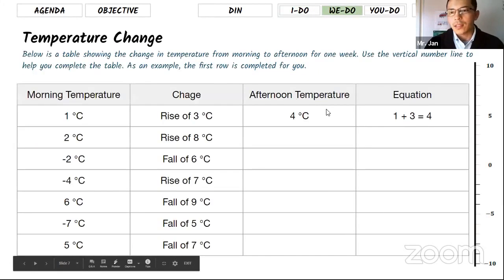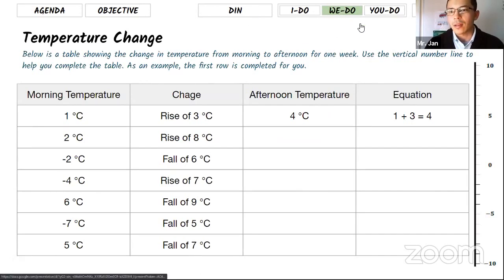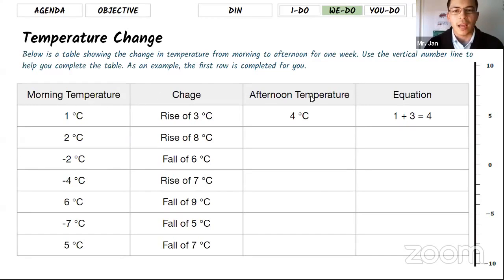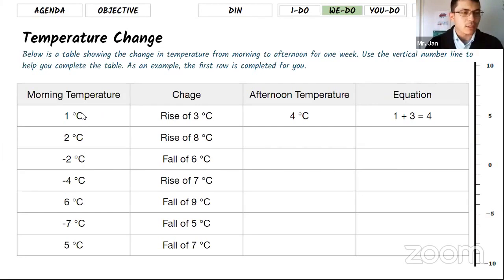I really appreciate it if you type your answers in the chat box — it counts as participation. In this table you can see a temperature change with morning and afternoon temperatures. Using those two data points — morning temperature and the temperature change — we're going to figure out the afternoon temperature and write the equation.